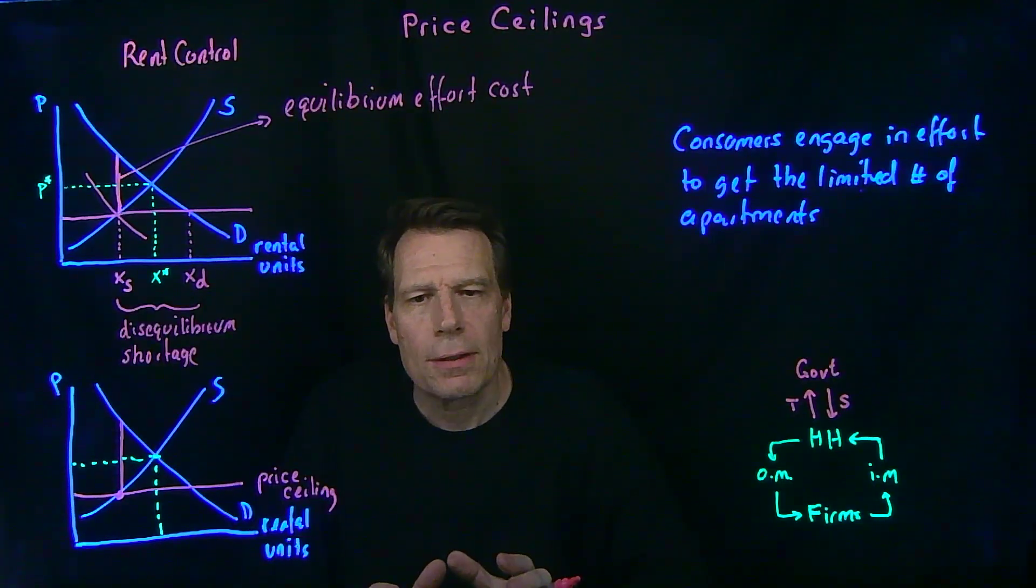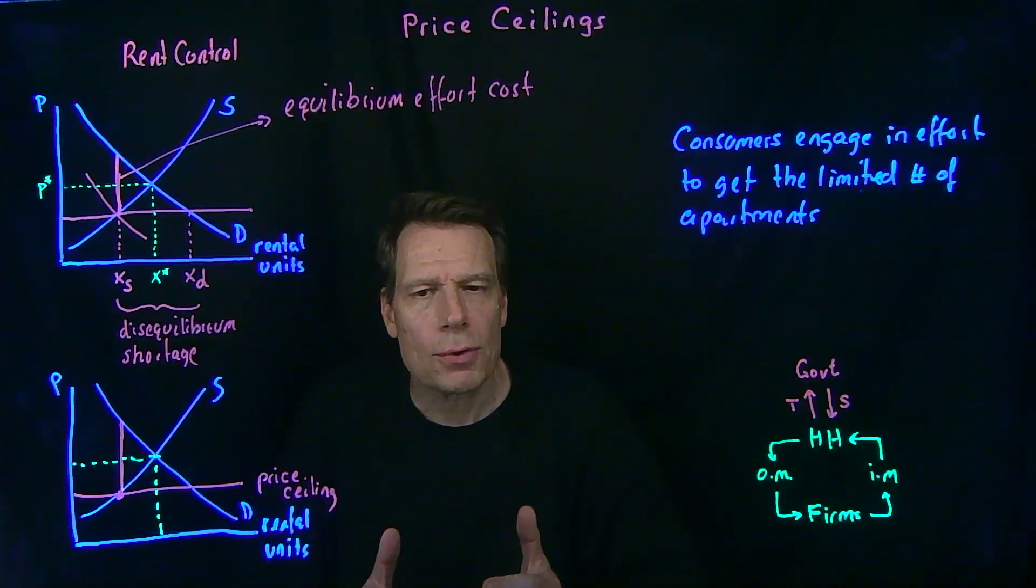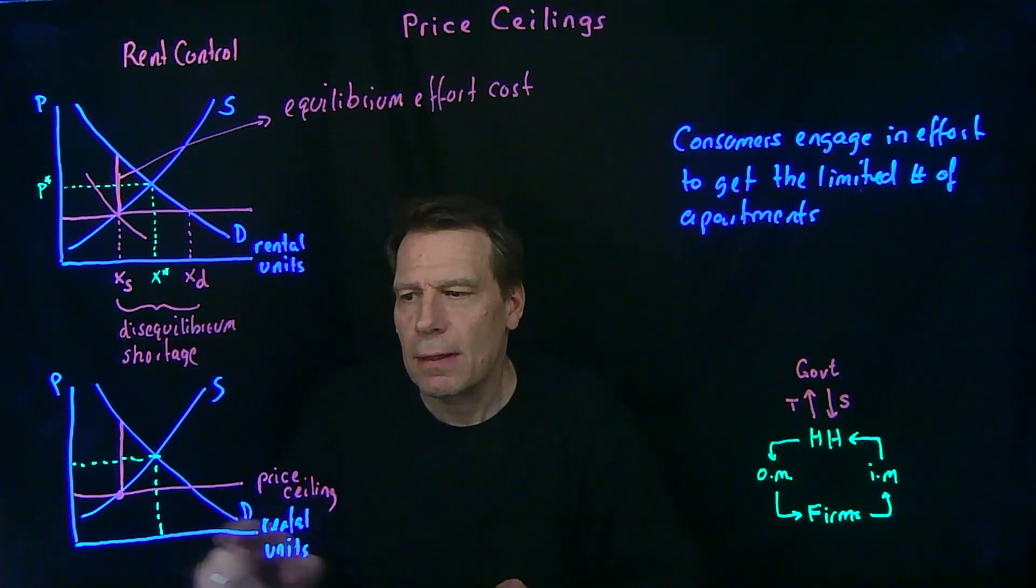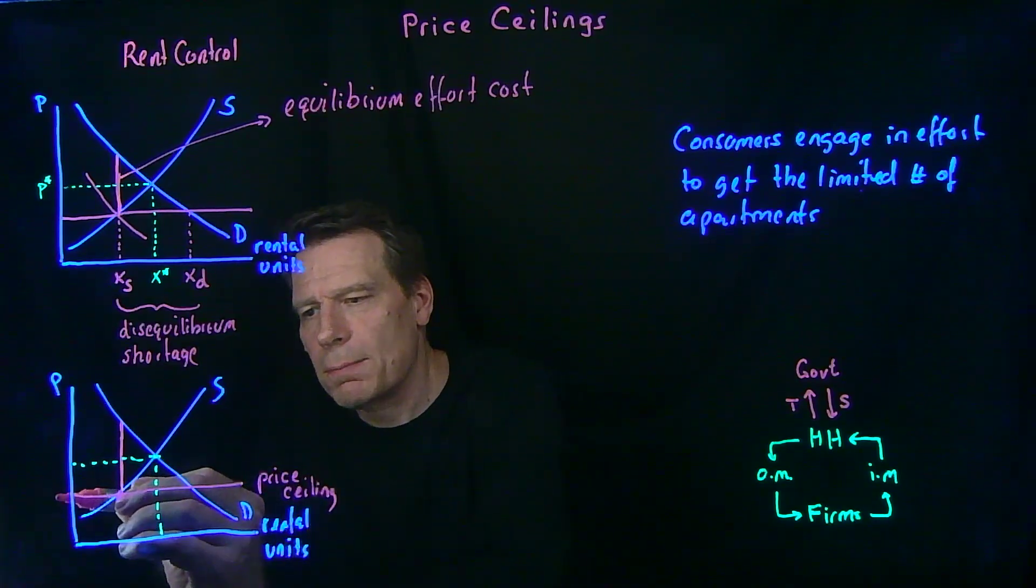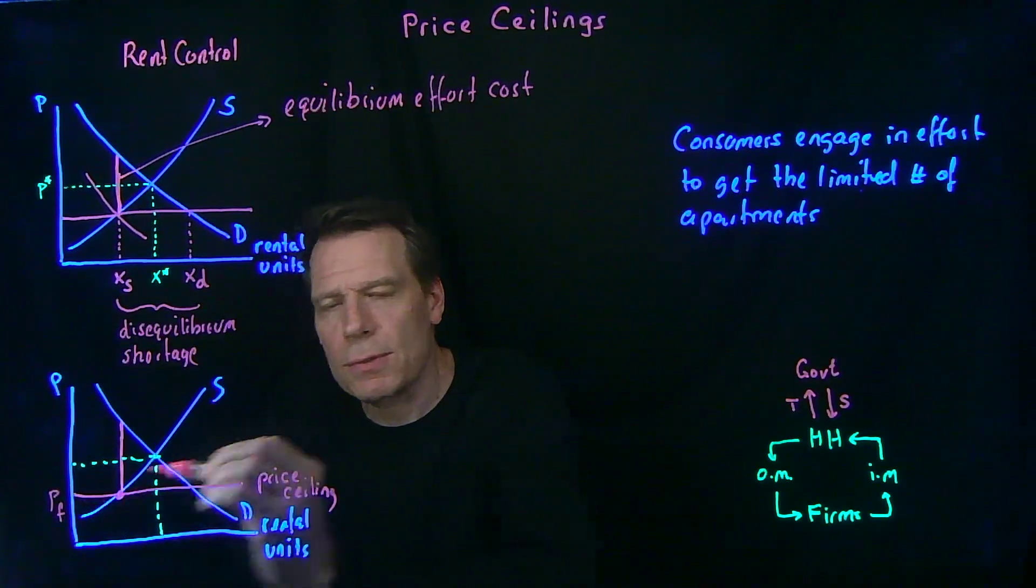Now we can ask, who is actually paying what, and who is receiving what? The firms, or the landlords, are receiving the price that's set by the price ceiling. So this becomes the price that the firms receive.